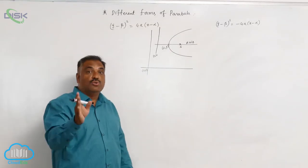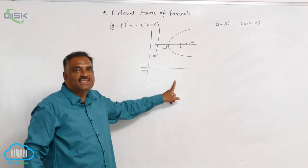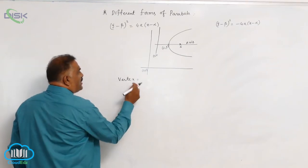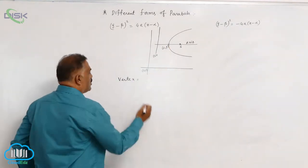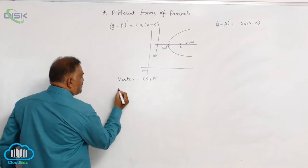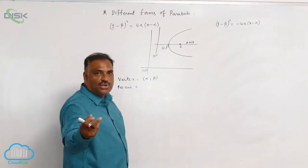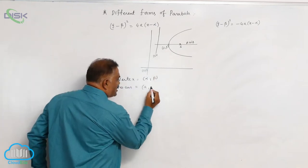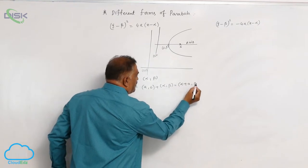We have to clearly see the axis of the parabola is parallel to the x-axis. First, vertex is equal to — previously it is (0, 0), now it is shifted to (α, β). So, new vertex is (α, β). Then comes focus. Focus is given by — previously it is (a, 0), now increased by (α, β). That is (a, 0) plus (α, β), which gives (α + a, β).